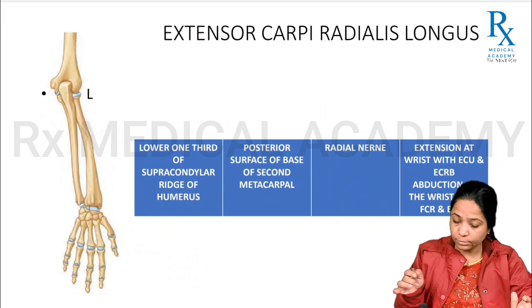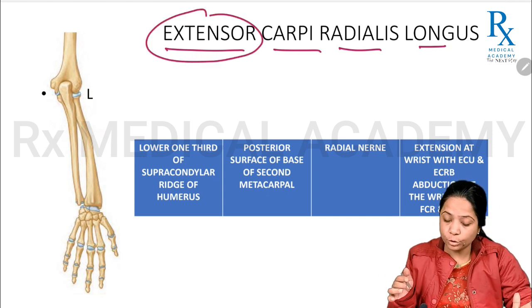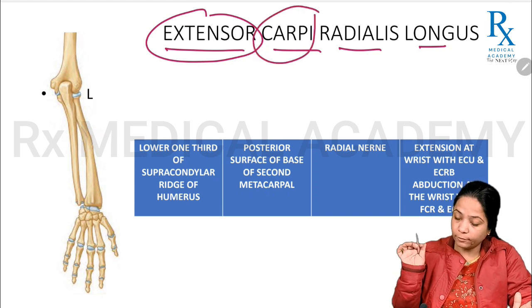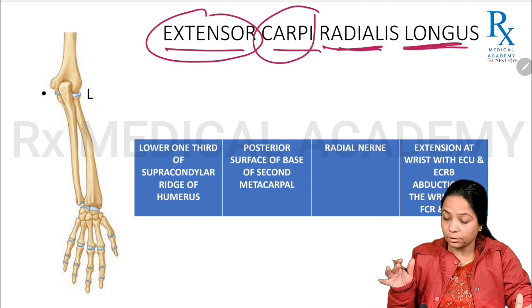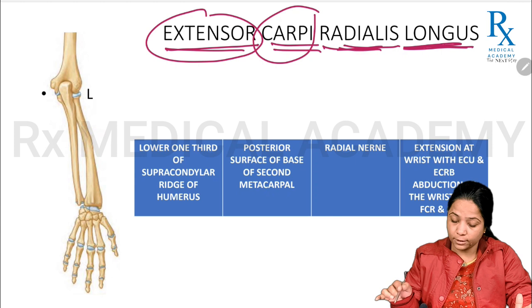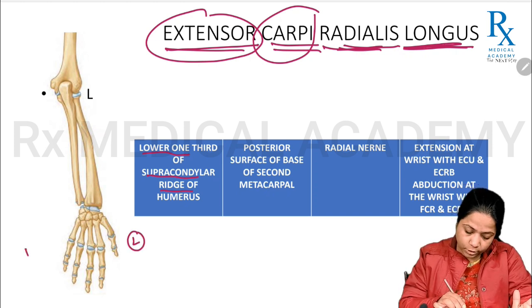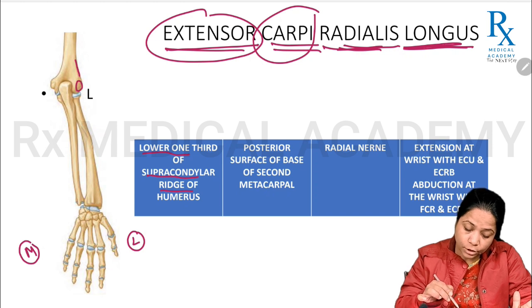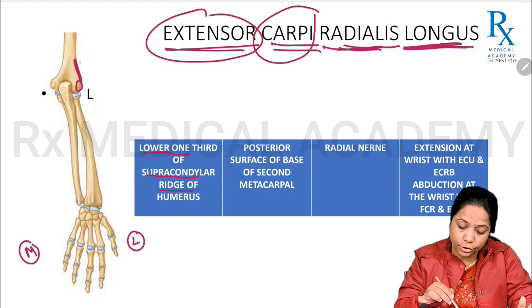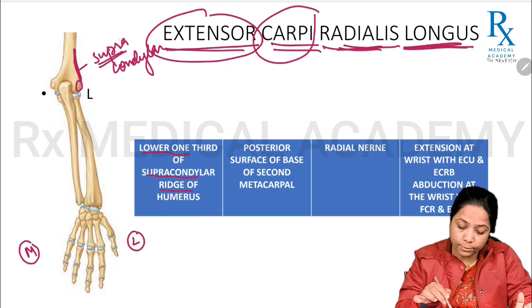The next muscle is extensor carpi radialis longus. Its function is to produce extension at the carpus — that is, at the wrist joint — located on the lateral side, and it is long in size. It arises from the lower one-third of the supracondylar ridge of the humerus. In the diagram, the lateral condyle is visible; just above it is the sharp lateral border of the humerus, the supracondylar ridge.